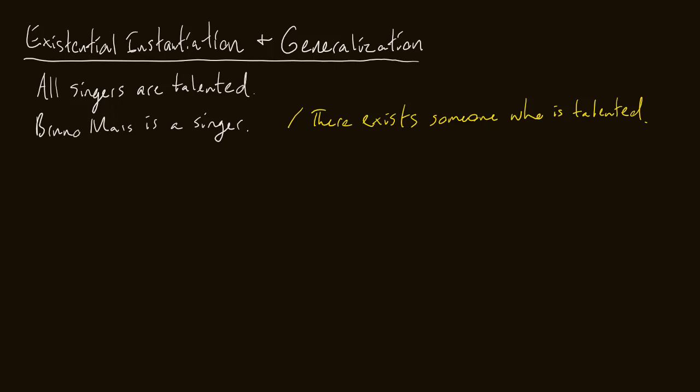With existential generalization, the idea is that we want to show there exists something that is something. The way we do that is by finding an example. In what we're doing, I want to show that there exists someone who is talented. I find someone who is talented — we're going to show that Bruno Mars is talented. Because I've found that that person is talented, I can existentially generalize and say there exists a person who is talented. That's a valid conclusion because we found that example.